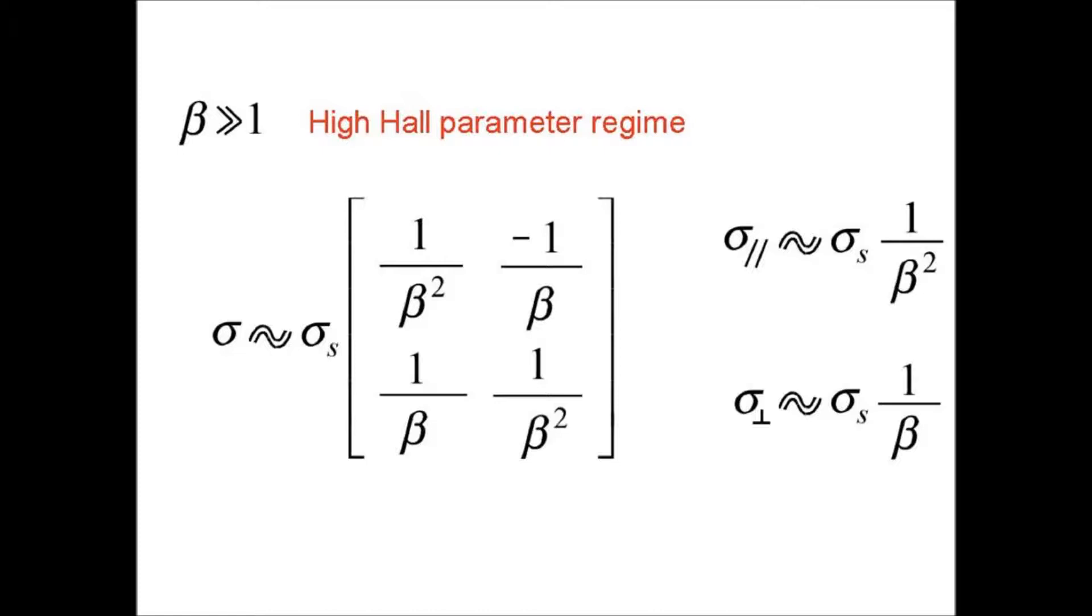But as you can see, its four components are very reduced. The parallel component is reduced by the square of the Hall parameter, and the transverse component by the inverse of the Hall parameter. So you have a tool to create a non-homogeneous electrical conductivity design.